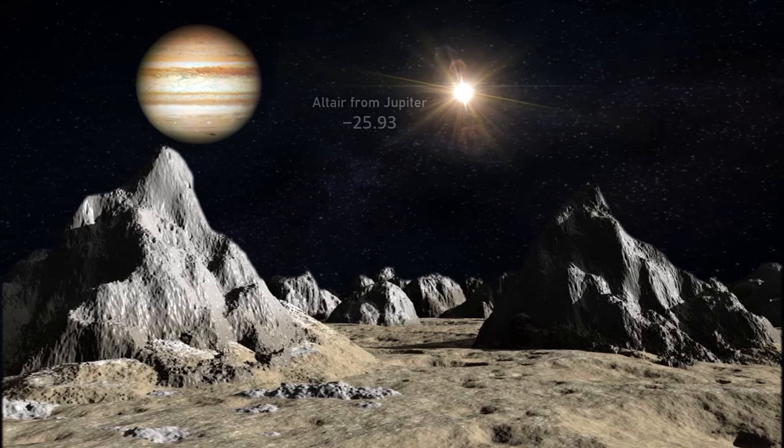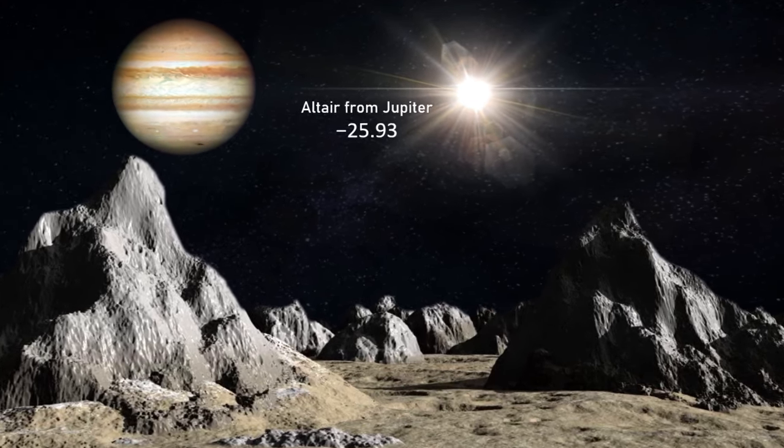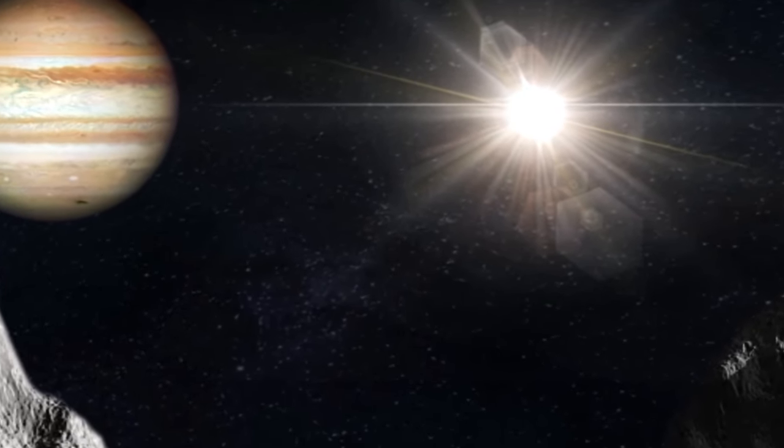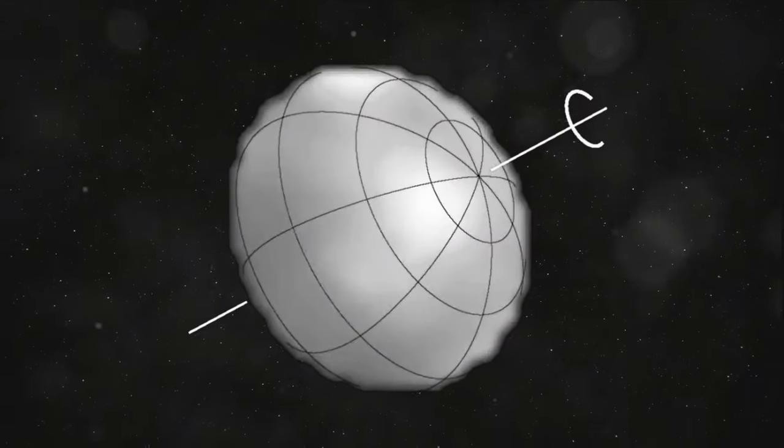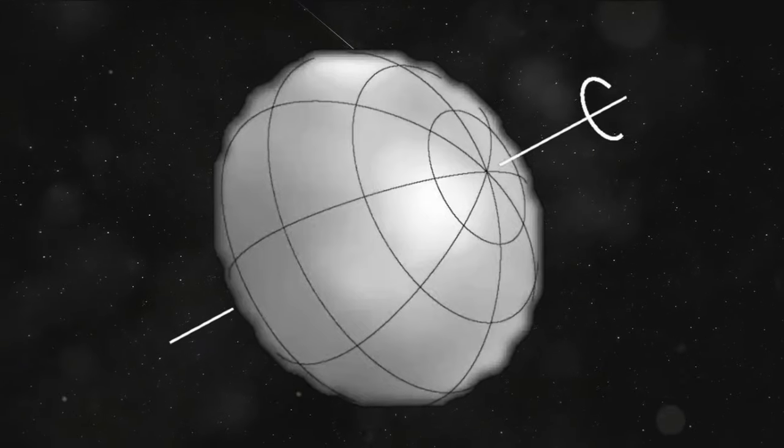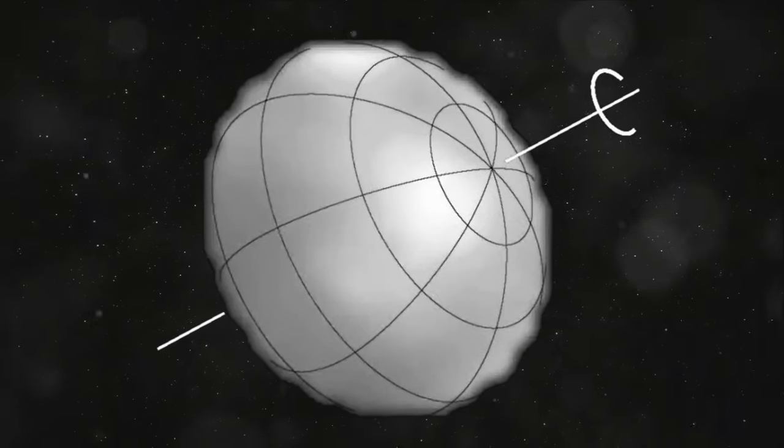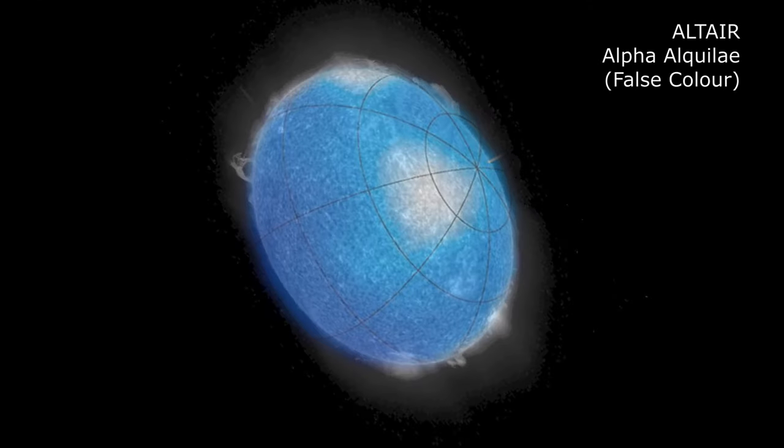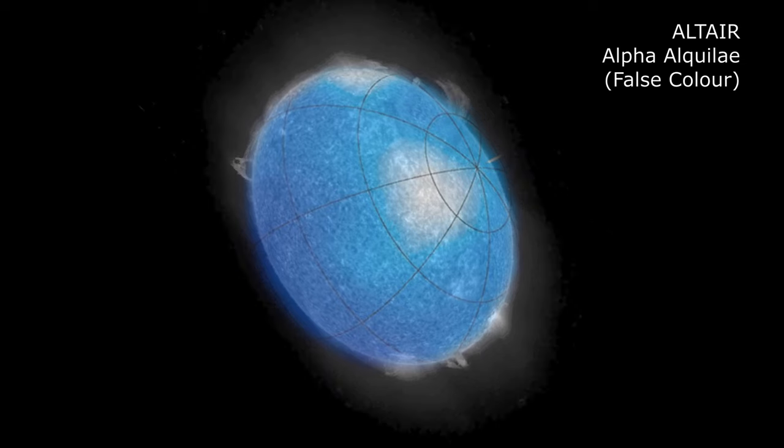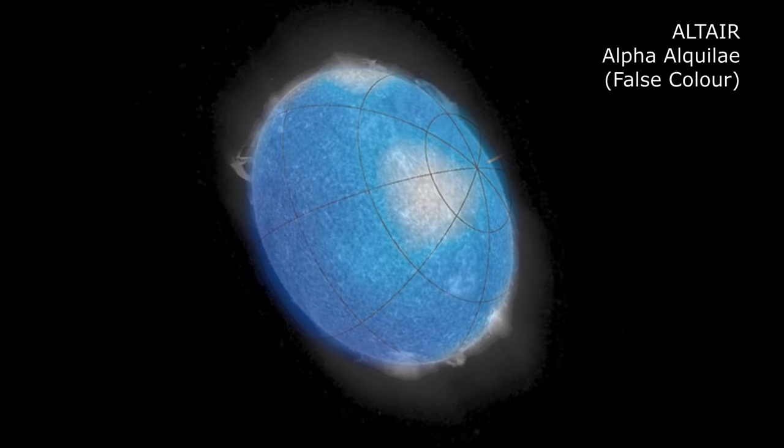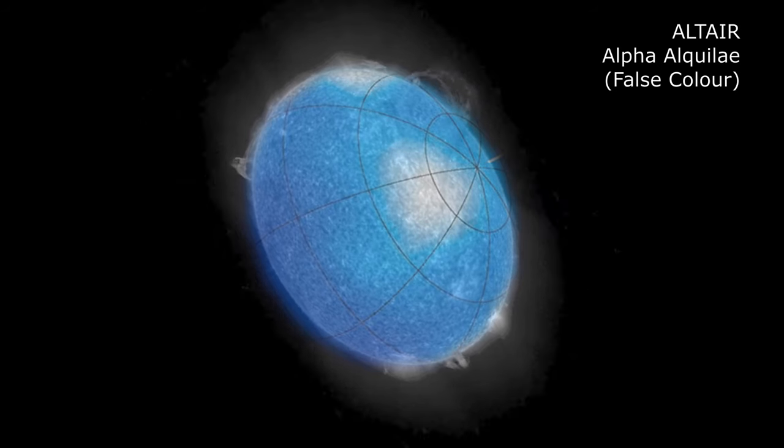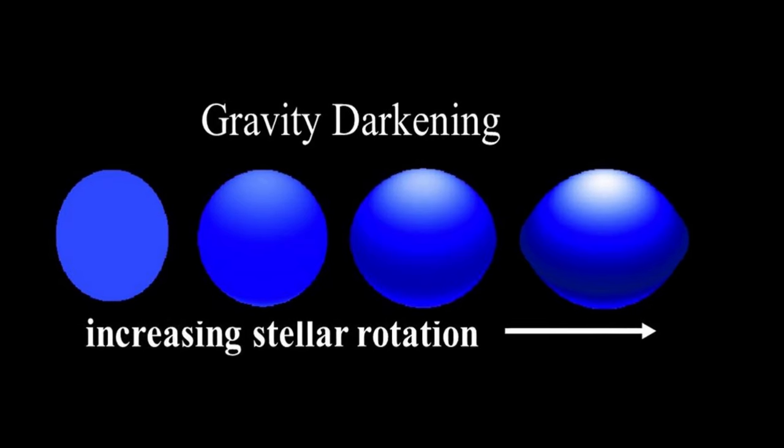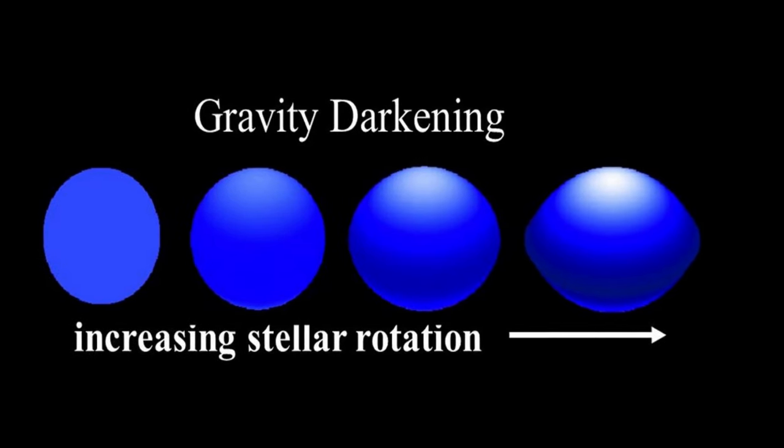Altair would also certainly pose a strange object in the sky, as the equatorial radius of the star is estimated to be 2.03 solar radii, in contrast to the polar radius of 1.63, which is a 25% increase of the stellar radius from pole to equator, and what this means is the star is somewhat egg-shaped. Theory predicts that, owing to Altair's rapid rotation, its surface gravity and effective temperature should actually be lower at the equator, making the equator less luminous than the poles. This phenomenon, known as gravity darkening, or the von Zeipel effect, was confirmed for Altair in 2001.